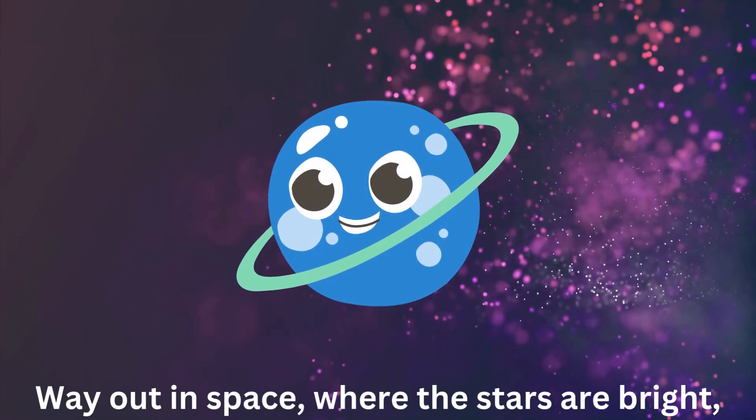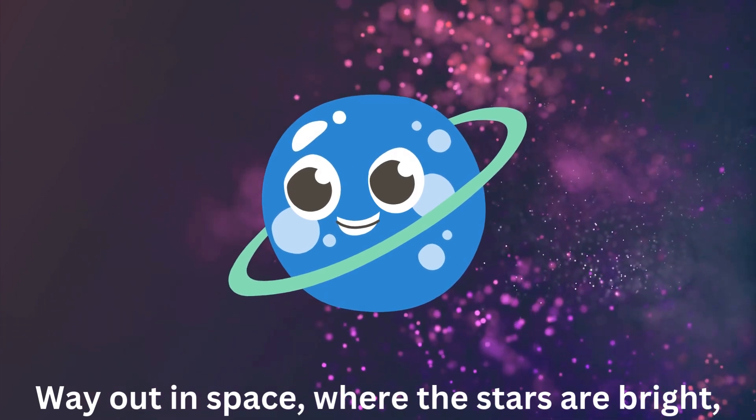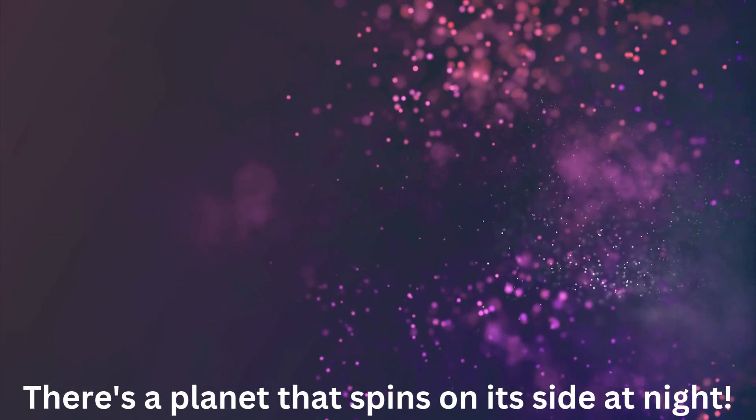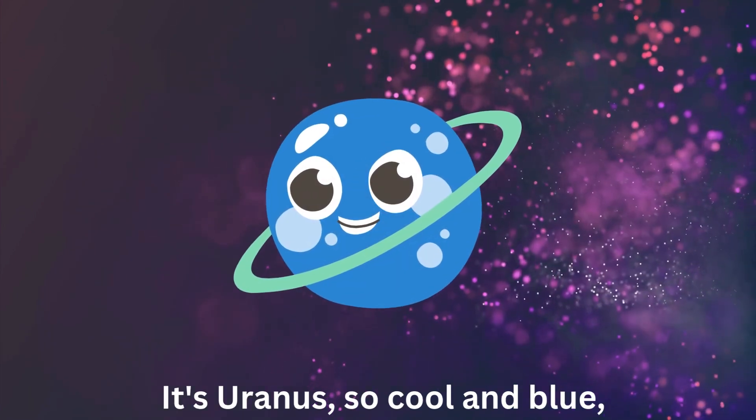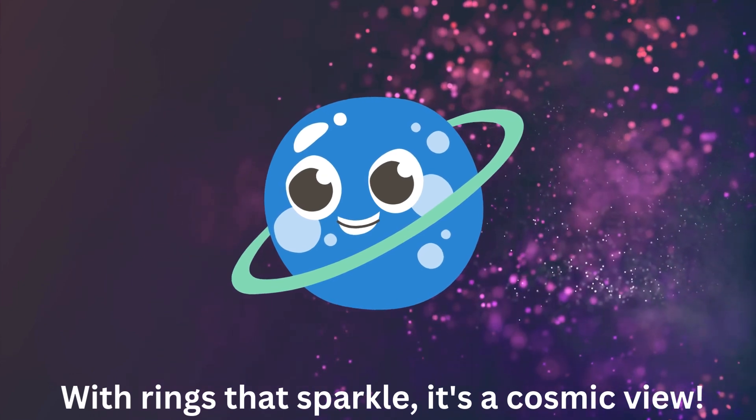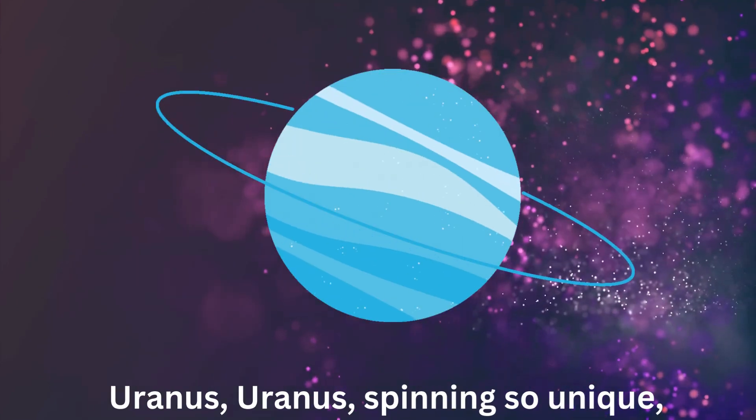Way out in space, where the stars are bright, there's a planet that spins on its side at night. It's Uranus, so cool and blue, with rings that sparkle, it's a cosmic view.